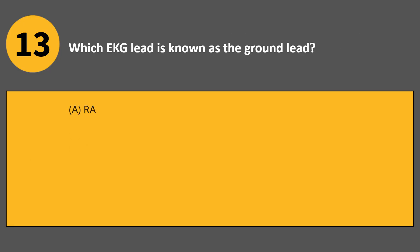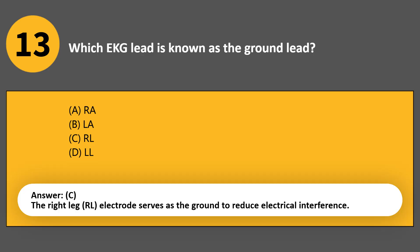Which EKG lead is known as the ground lead? A. RA. B. LA. C. RL. D. LL. Answer C. The right leg (RL) electrode serves as the ground to reduce electrical interference.